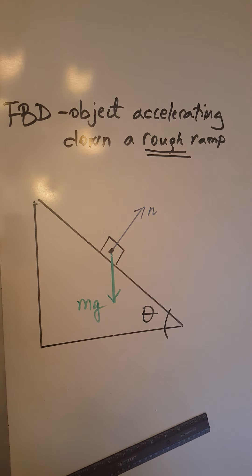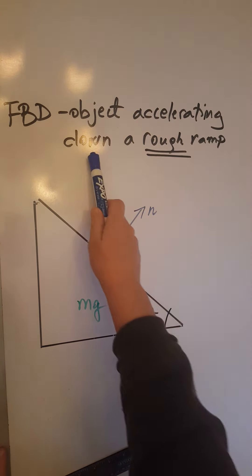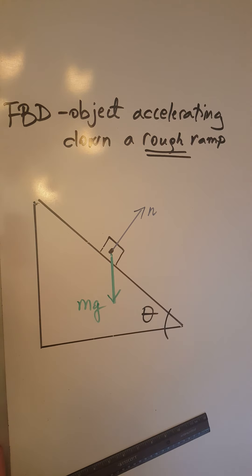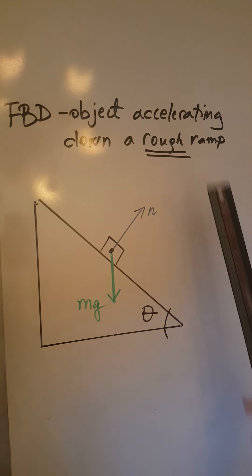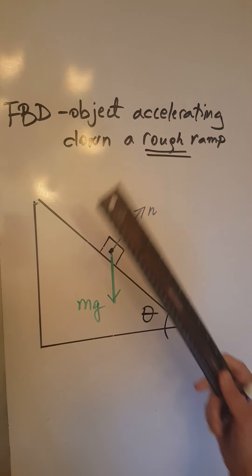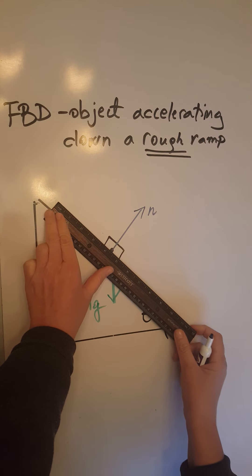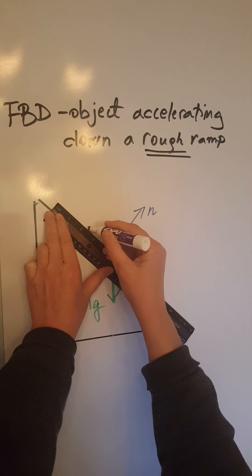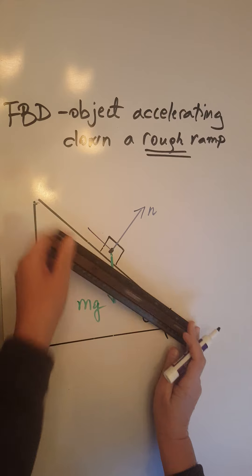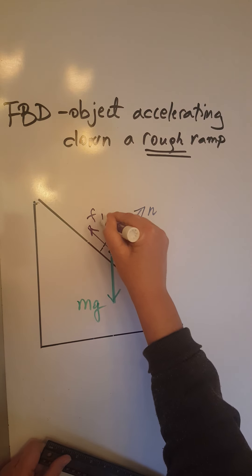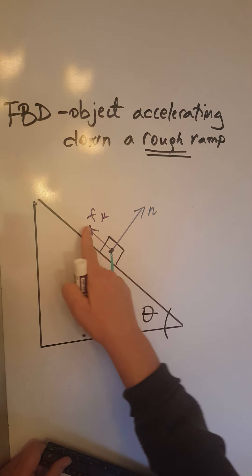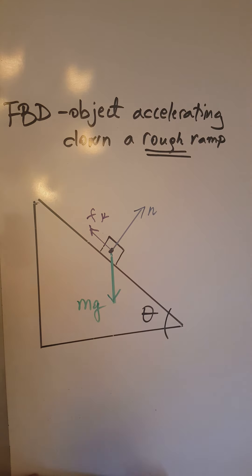Because this object is accelerating down a rough ramp, there will be a force of friction in the opposite direction of motion. If the object is accelerating down the ramp, the force of friction is going to be up the ramp. Label it fk — the force of kinetic friction.